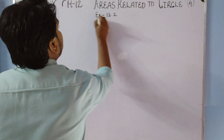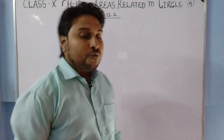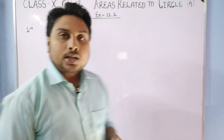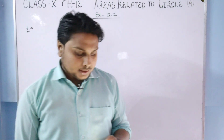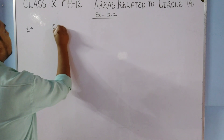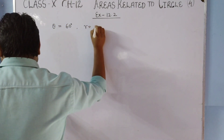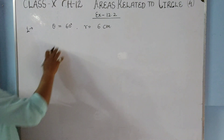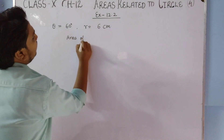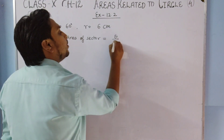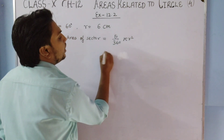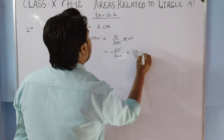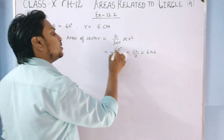The first question of Exercise 12.2 asks us to find the area of a sector of a circle with radius 6 cm and angle of sector theta equal to 60 degrees. The area of a sector is theta upon 360 degrees times pi r squared. Here theta is 60 degrees, pi is 22/7, and r is 6 cm, so we compute 60/360 × (22/7) × 6 × 6.